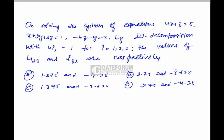We have given 3 equations. 4X plus Z equals 5, X plus 2Y plus 3Z equals 1, and minus 3Z minus Y equals 3. We have to find the values of U23 and L33 by using LU decomposition method. The given equations can be written as AX equals B, converting the linear equations into matrix form. This matrix A can be written in LU decomposition form. L into U. L is the lower triangle matrix whereas U is the upper triangle matrix.